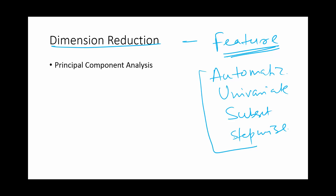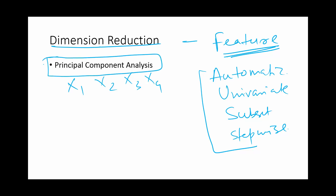Some people confuse dimension reduction with feature selection, but dimension reduction is actually different. In dimension reduction, you do not drop any variable — you do not select a variable out of the set of variables. You actually combine them. Principal component analysis is one of the dimension reduction methods, and there could be other methods like factor analysis and so on.